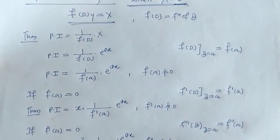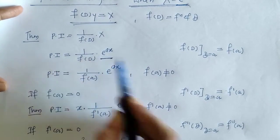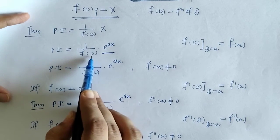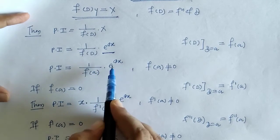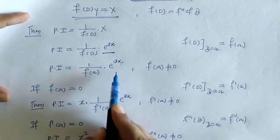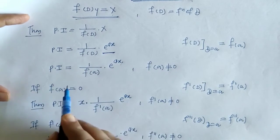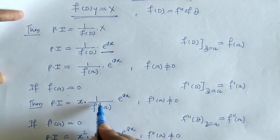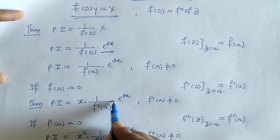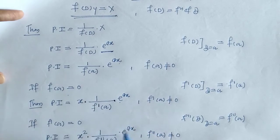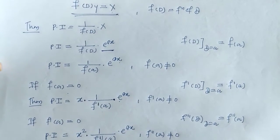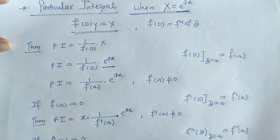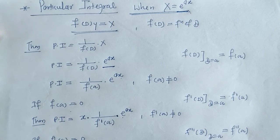So this is the PI when X equals e raised to ax. We have to replace D by a, where a is the coefficient of x. We check that the denominator should not be 0. If it does get 0, we multiply by x and in the denominator we will have f'(a), with e raised to ax as it is — and so on. This rule will get clear with an example.